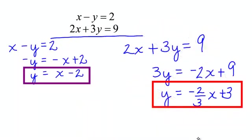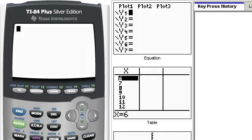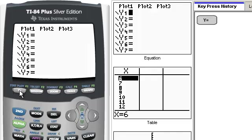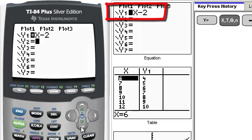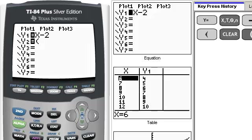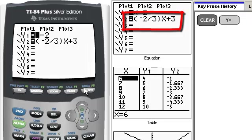And so I could graph each of them and see where they intersect. I am going to use my graphing calculator now. I'm going to type both of these equations into my graphing calculator. I'm going to go to the y equal button. My first equation was x minus 2. I will go down. My second equation was negative 2 thirds x plus 3. I'm going to graph this.